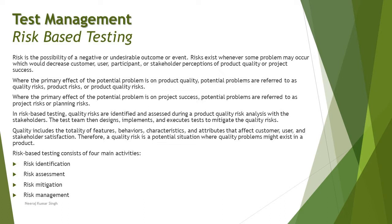How exactly do we differentiate between them? Anything which impacts the quality attributes of the product — for example performance, security, usability, recovery, portability — these are all quality characteristics of a product. If anything impacts the product's quality attribute, you call it product risk. If there's any risk which impacts the process of making the product, that's project risk. For example: poor documentation, developers fixing defects late in the cycle, test cases not clearly defined, requirements not documented on time, or environment not ready on time. All these are process-oriented factors that can impact delivery of the product as per schedule, and we relate all these to project risk.